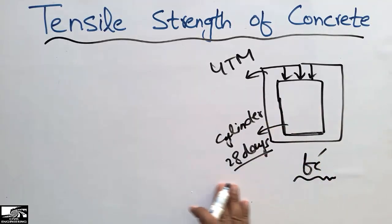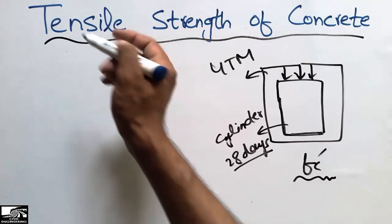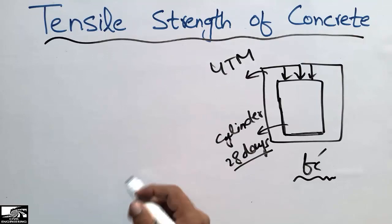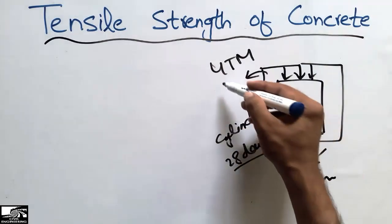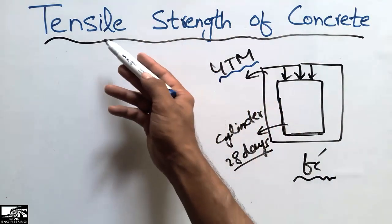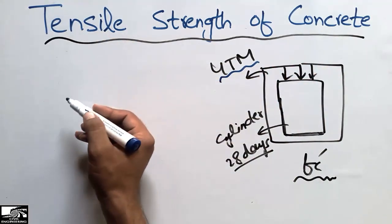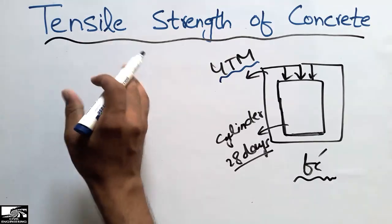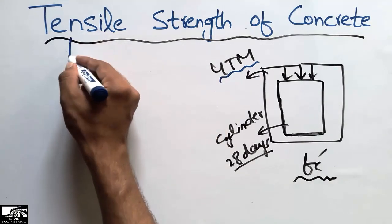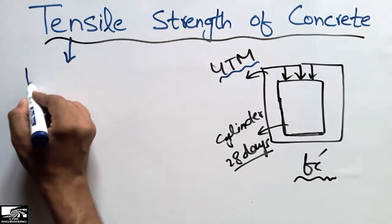Now I will discuss how we can find out the tensile strength of concrete, because there is no machine like the universal testing machine which can be used to find the tensile strength of concrete. As I previously discussed in another video — the link is in the description — the tensile strength of concrete is approximately 10 percent of the compressive strength.